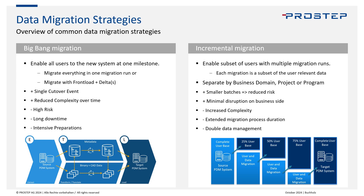The benefit of Big Bang migration is a single cutover event, so you can focus all resources onto that one point in time, which also reduces complexity over time. On the downside, there is high risk — if that event fails, you face a large rollback. There can also be long downtimes causing business disruption, and intensive preparation with multiple test migrations required.